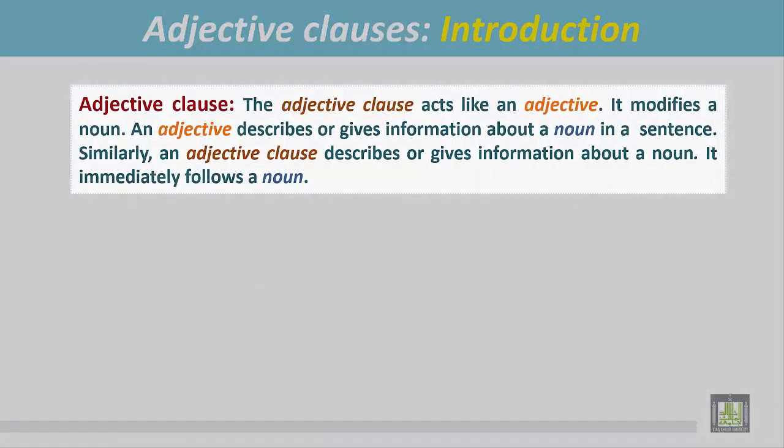Adjective Clause: The adjective clause acts like an adjective. It modifies a noun. An adjective describes or gives information about a noun in a sentence. Similarly, an adjective clause describes or gives information about a noun. It immediately follows a noun.